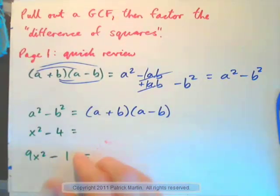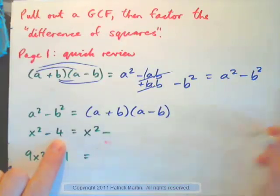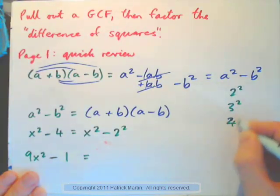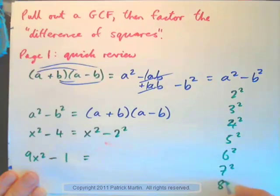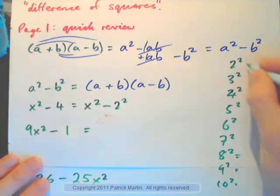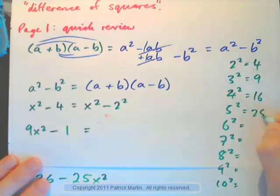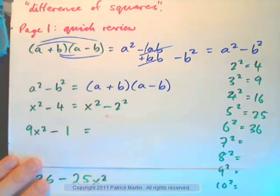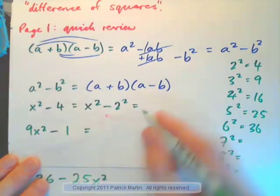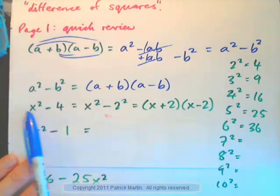This helps us factorize the expression X squared minus 4, because X squared minus 4 can be thought of as X squared minus 2 squared. And it's useful to remember all your perfect squares — 2 squared is 4, then 9, 16, 25, 36, and so on. So X squared minus 2 squared, just like A squared minus B squared, can be written as X plus 2 times X minus 2. Now for 9X squared minus 1: 9X squared is 3X all squared, and 1 is 1 squared, so this factors as 3X plus 1 times 3X minus 1.